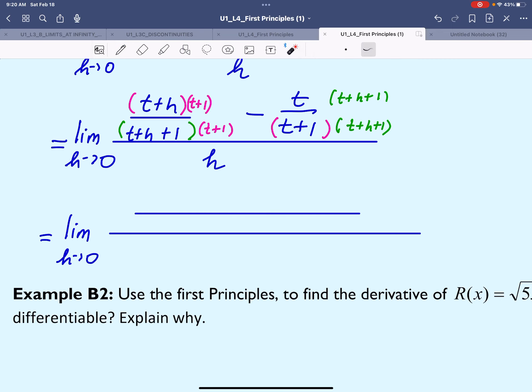Remember to keep these denominators in factor form and expand and simplify the numerator. Here we have t² + t + ht + h. Here we have minus t. Remember, you have a minus before the fraction, attach this minus to the numerator to make it easier to simplify.